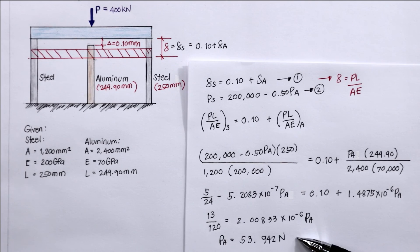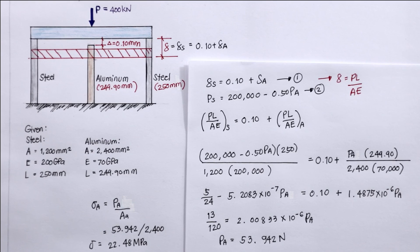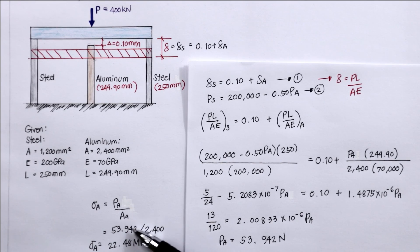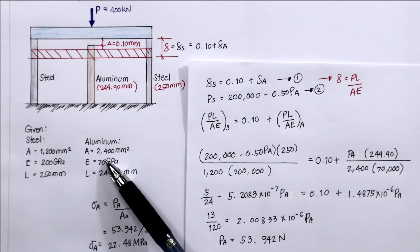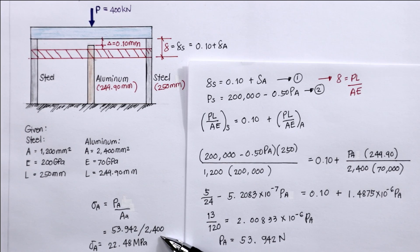From this equation we can solve for PA algebraically. The value of PA is 53,942 N. The problem asks for the stress in the aluminum bar: stress = force / area = 53,942 N / 2400 mm² = 22.48 MPa. Therefore, the stress of aluminum is 22.48 MPa.